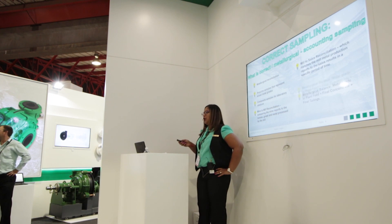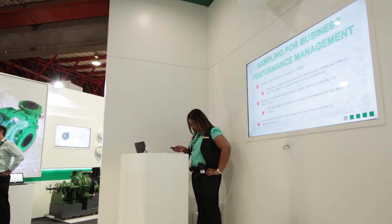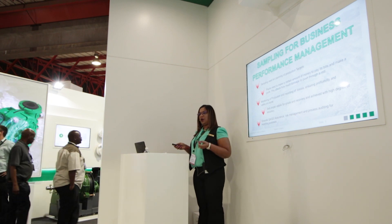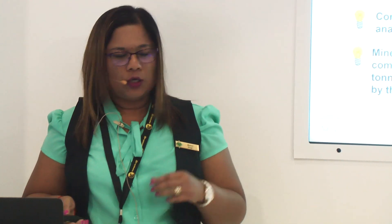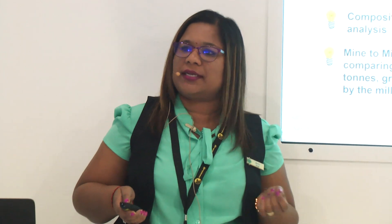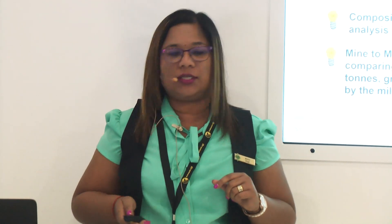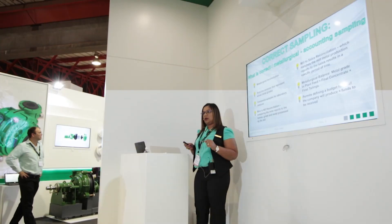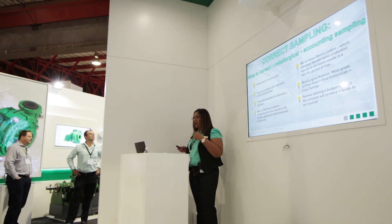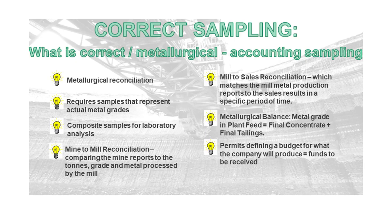In order for those decisions to be made, correct sampling is required. This gives decision makers the assurance that the information they're providing to their stakeholders is accurate, verifiable, and representative. You may be thinking: what is correct sampling or metallurgical accounting sampling? Basically, think of it like this — check in equals check out. It's a metallurgical reconciliation. The sample represents your actual metal grades in your feed, and you produce competent samples for laboratory analysis.